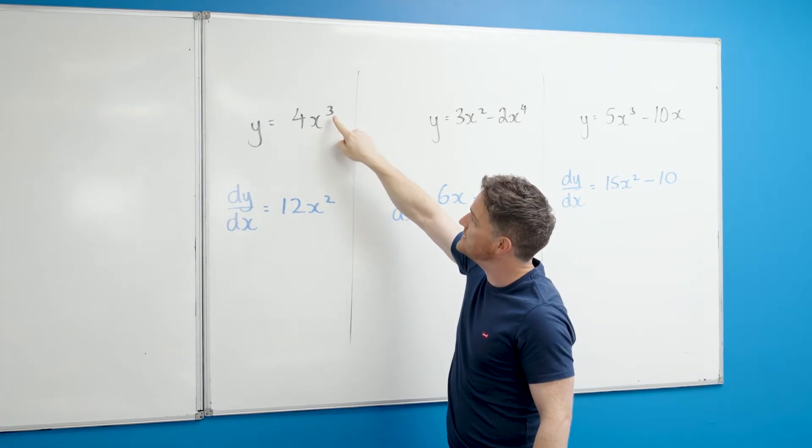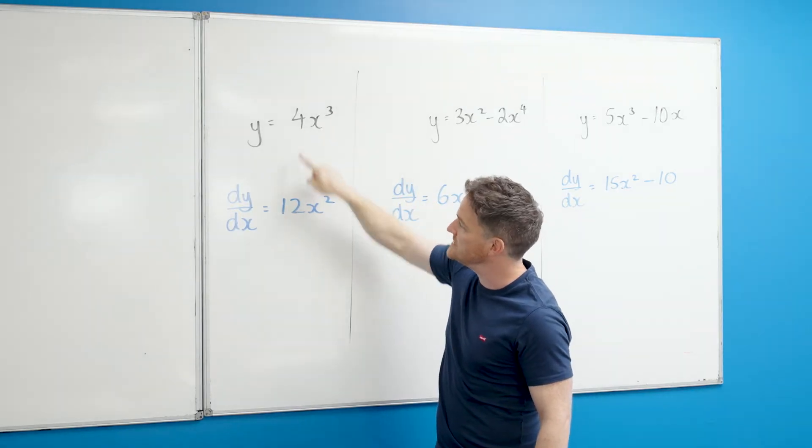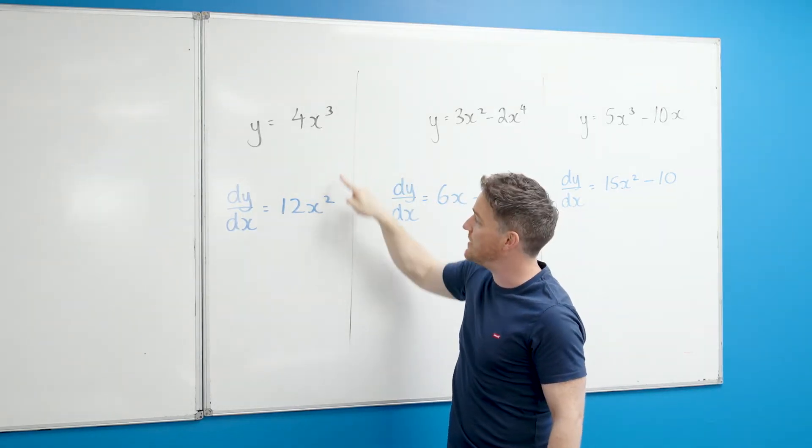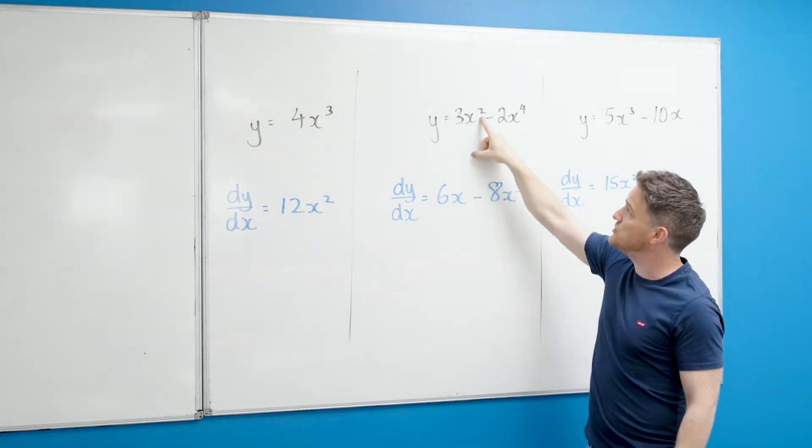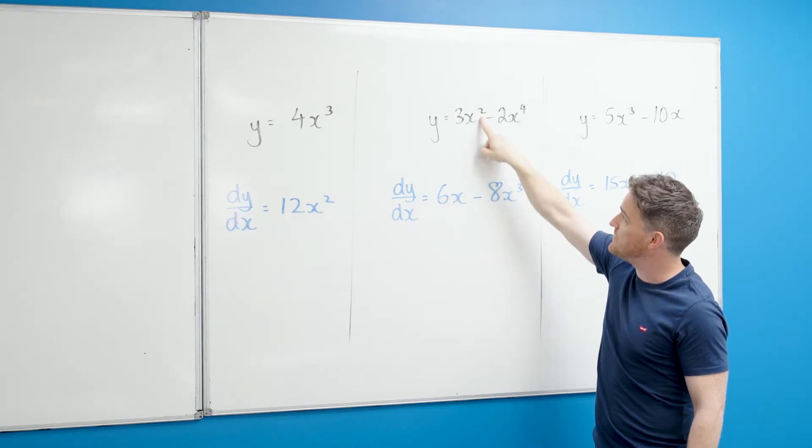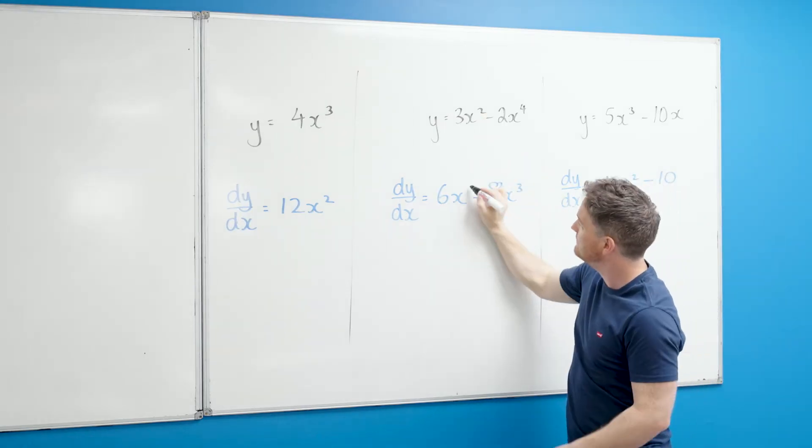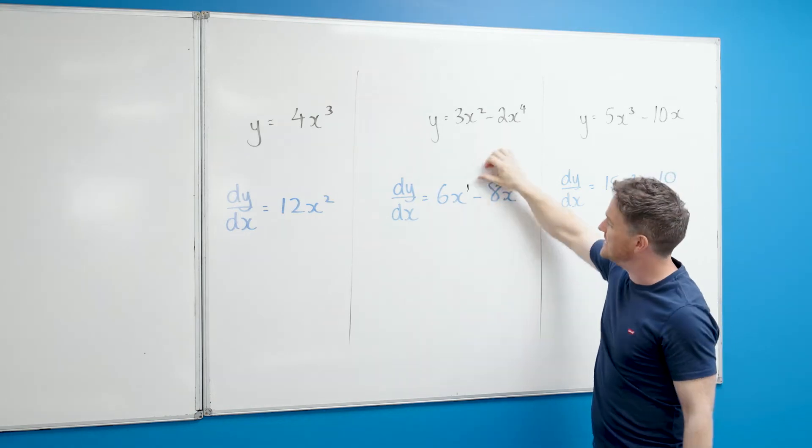What's happening each time: here we had 4x³, I did 3 multiplied by the 4 to give me 12, and I drop the power by 1. Let's just see what happens here: I have 2 by 3 which gave me 6, and I dropped the power by 1, which would be x to the power of 1, but we don't tend to write that, so I just said x.